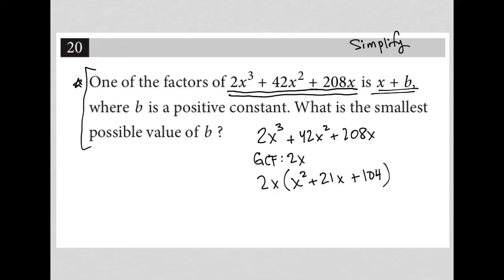Now I'm going to look to see, are there two factors of 104 that add up to 21? So 104, I could get 52 and 2, that wouldn't work. 26 and 4, let's see, what's 104 divided by 4? Using my calculator, 26. 26 and 4 also would not work.